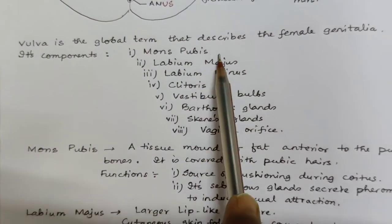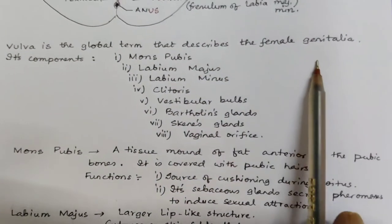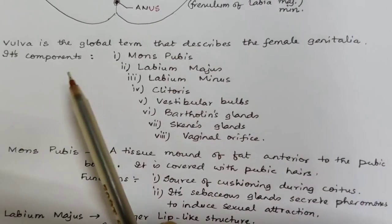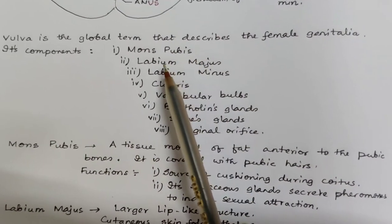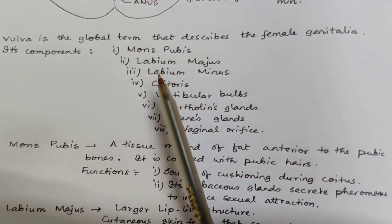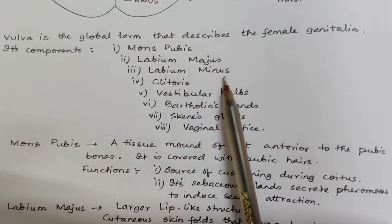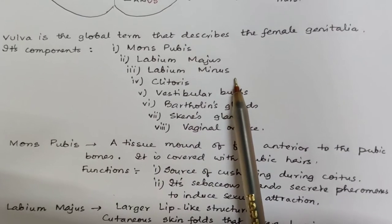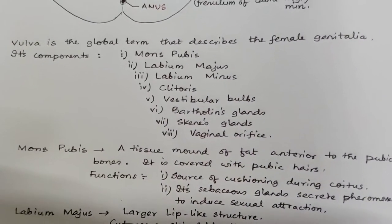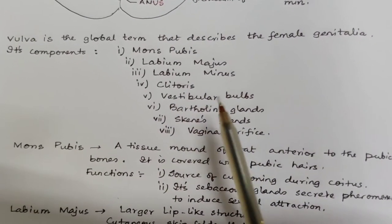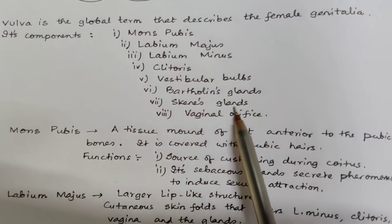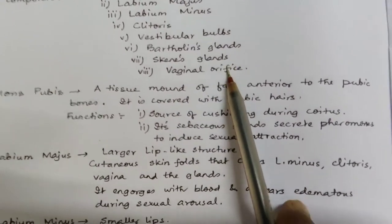Vulva is the global term that describes the female external genitalia. Its components are Mons pubis, labia majora, labia minora, clitoris, vestibular bulbs, Bartholin's glands, Skene's glands, and the vaginal orifice.